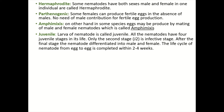Juvenile larvae of nematodes: some larval stages are called juvenile stages. All nematodes have four juvenile stages in their life. Only the second-stage juvenile (J2) is the infective stage in most nematode species. After the final stage, the nematode differentiates into male and female. The life cycle of a nematode from egg to egg is completed within two to three weeks under favorable environmental conditions.